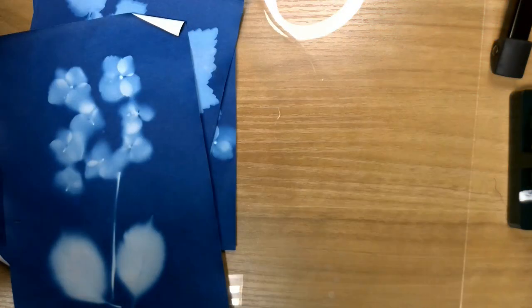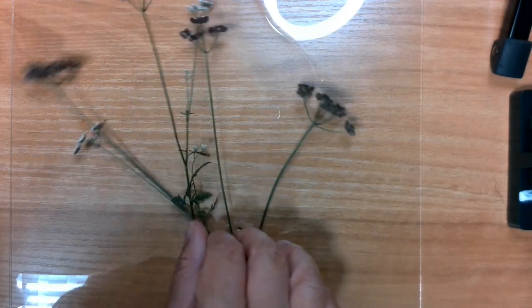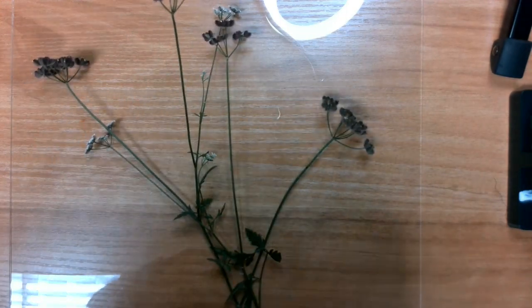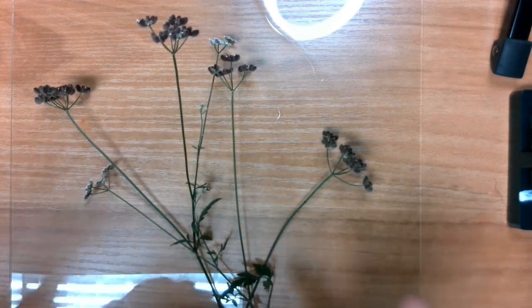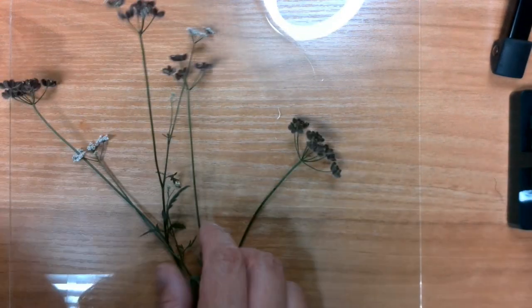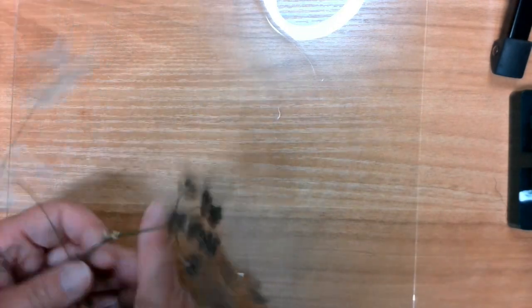You should have unexposed solar paper and a plastic sheet. It may be smaller than this one. What you're going to need to do is gather something to put on the paper which is going to be your print. I just went outside and picked some plants, but you don't have to use plants. You can use anything that you have lying around that you think would make an interesting photo.